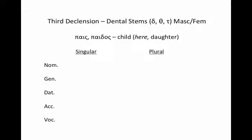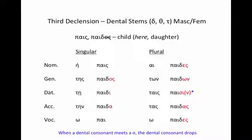The first stem type are dental stems — that would be delta, theta, and tau. Let's look at a masculine-feminine noun: for example, pais/paidos. To get our stem, we always go to the genitive and drop off the -os. We'll use the word for 'daughter' here for the feminine. You'll see that the endings are exactly like we saw on the chart: the nominative is unique, -os, -i, -a, irregular vocative, and then in the plural -es, -on, -si with the movable nu, -os, and -es. With a dental stem, when one of those dental consonants meets the sigma in the dative plural, the dental consonant drops, and we just have sigma-iota with the movable nu.